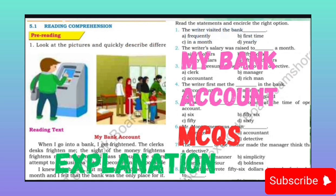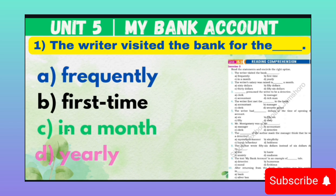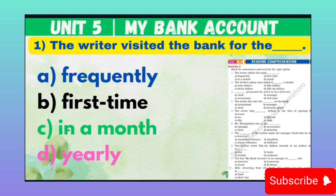MCQ number 1: The writer visited the bank for the first time. It means the writer visited the bank — musannif ne bank ka daura kiya. Option A: Frequently. Option B: First time. Option C: In a month. Option D: Yearly. Correct option is B — First time.